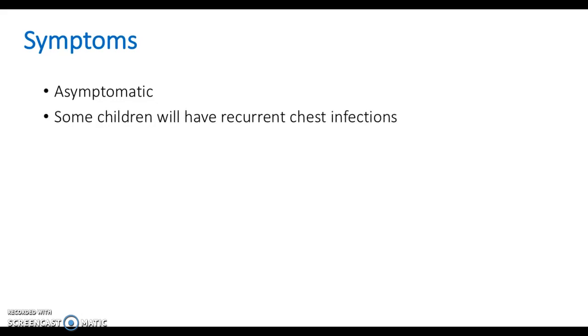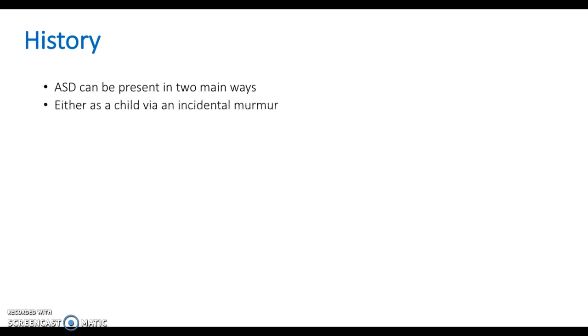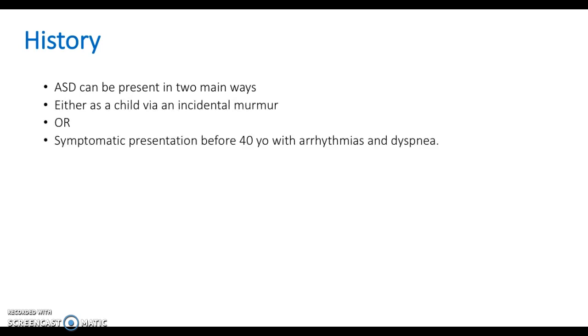Let's talk about symptoms. Most patients will be asymptomatic, so this won't be discovered until later on in life. Some children may have recurrent chest infections. However, most get diagnosed from the age of four with an incidental murmur, or later in life when they have arrhythmias or dyspnea. ASDs can present either as a child via an incidental murmur, or with symptomatic presentation before 40 years old with arrhythmias and dyspnea.